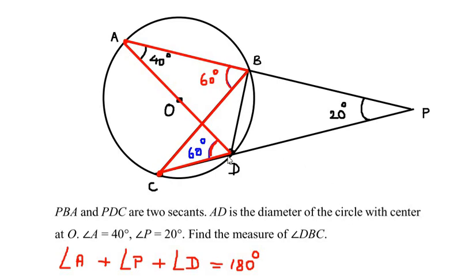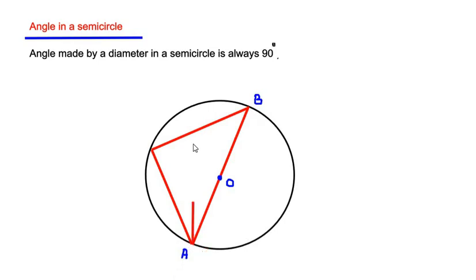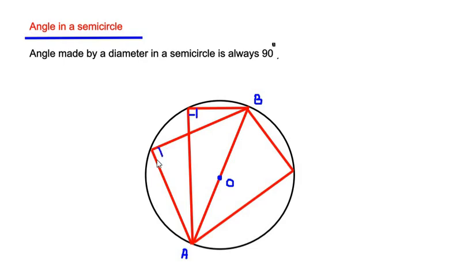The question asks for angle DBC, which is a smaller angle. To find it, we use another theorem: the angle in a semicircle theorem. It states that the angle made by a diameter in a semicircle is always 90 degrees. In a circle with diameter AB passing through center O, no matter at which point in the semicircle the angle is made, it is always 90 degrees. This is also known as Thales' theorem.